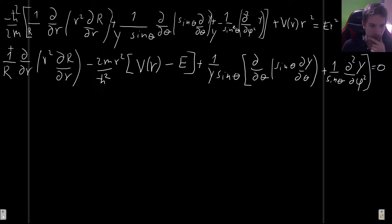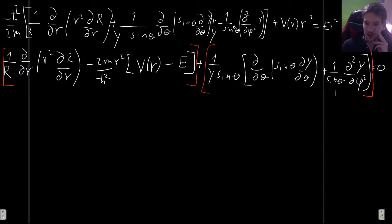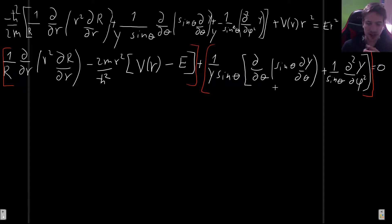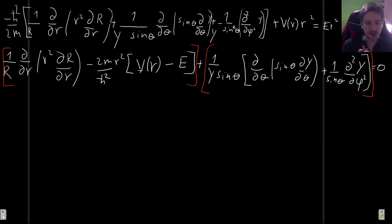Since the left side depends only on r and the right side only on angles, each side must be a constant — changing one variable cannot affect the other side. This means the angular equation is the same regardless of your potential; only the radial equation changes depending on V(r). This is actually quite interesting: the angular part is universal for any spherically symmetric potential.